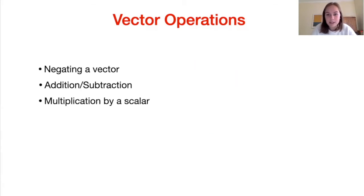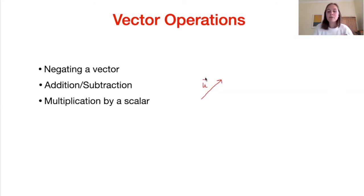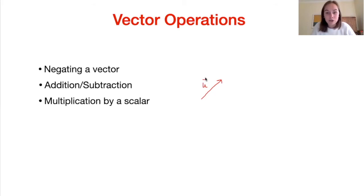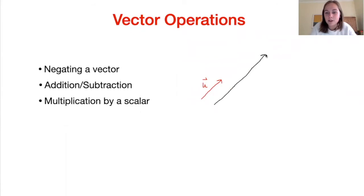Third, multiplication by a scalar. If we have a vector u and we want to multiply it by a scalar such as 3 to get 3u — remember, a vector has magnitude and direction, and a scalar has only magnitude — only the magnitude of the vector will change and its direction will remain unchanged. So 3u will be in the same direction as u but have a length three times as long.